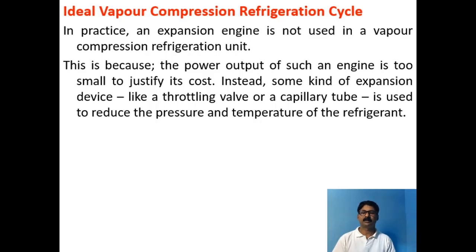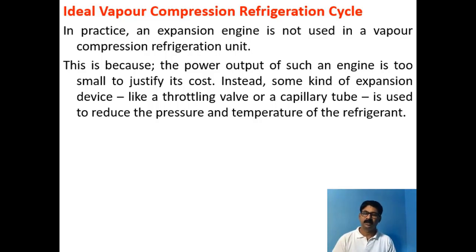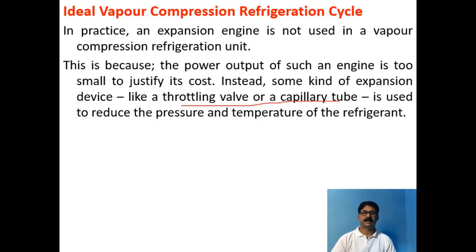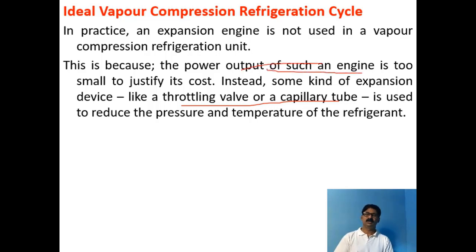In practice, the Expansion Engine is not used. Instead, we use an Expansion Device called a Throttling Valve or Capillary Tube. The purpose of this Expansion Device is to reduce the pressure and temperature of the refrigerant. Before passing it through the evaporator coils, its temperature has to be below that of the space to be cooled. The reason the Expansion Engine is not used is that its power output is too small to justify its cost.